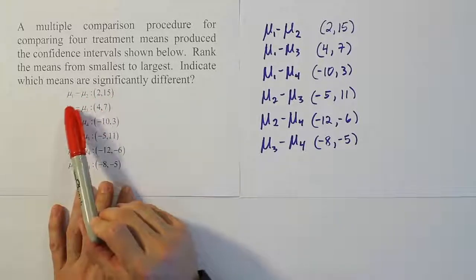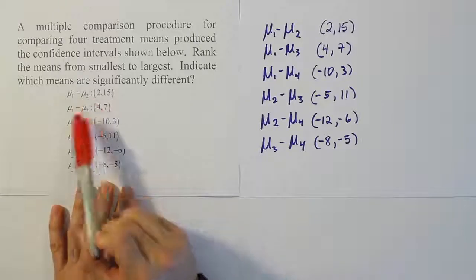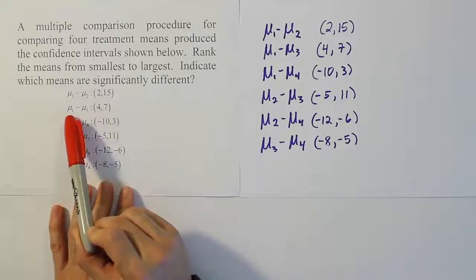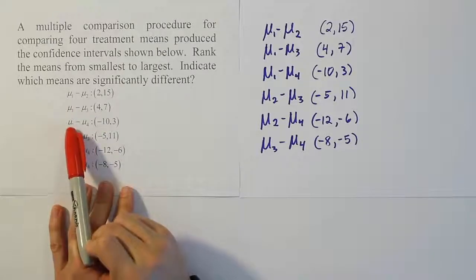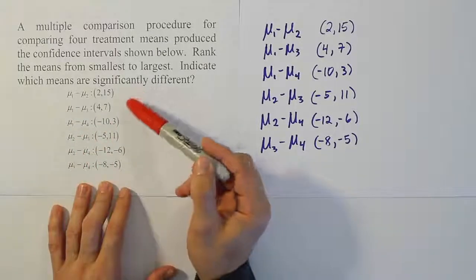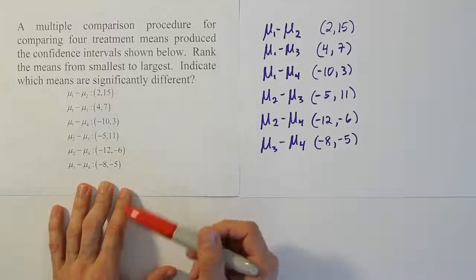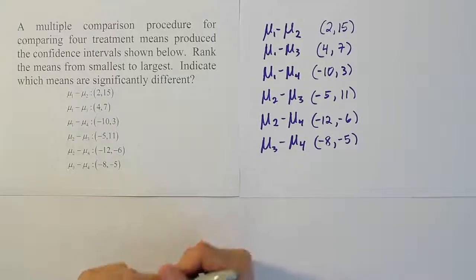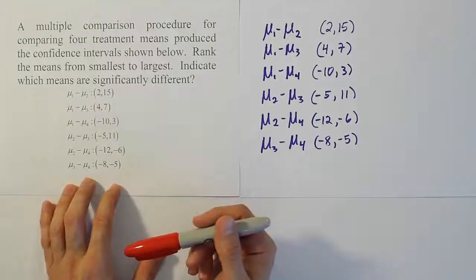For example, this confidence interval involved mean 1 minus mean 2. This one is mean 1 minus mean 3, the first group's mean minus the third group's mean, and so on. This is similar to what you would get from a computer display when you run a multiple comparison procedure — you get the result and it's your job to interpret it.